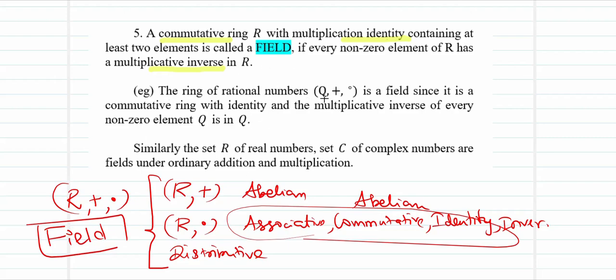The ring of rational numbers Q with respect to + and · is a field, since it is commutative, has an identity element, and every non-zero element of Q has a multiplicative inverse in Q. Similarly, the set of real numbers and the set of complex numbers form fields under ordinary addition and multiplication. With this, algebraic structures with two binary operations should now be clear, and we are ready to do problems. Happy learning, thank you very much.